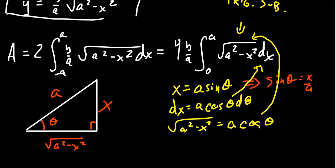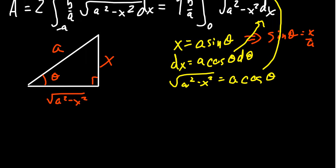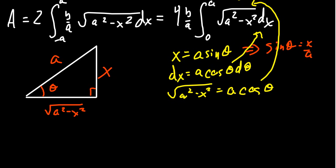Making those substitutions, we're going to end up with 4b over a integral. The square root is going to become a cosine, but the dx also becomes a cosine plus a d theta. Notice we do have a definite integral.